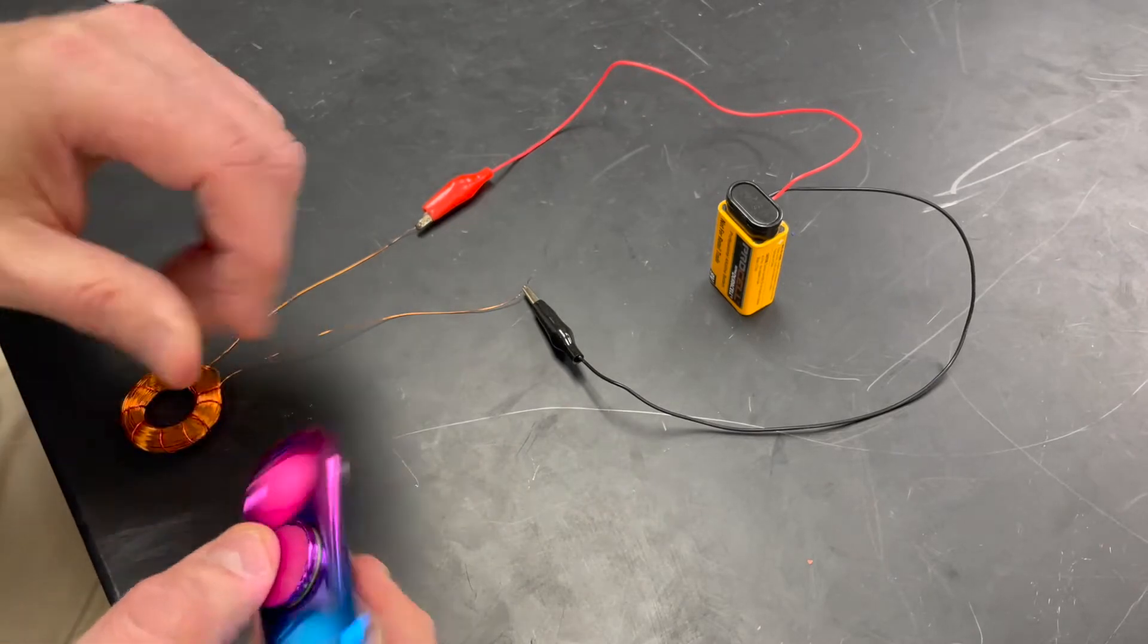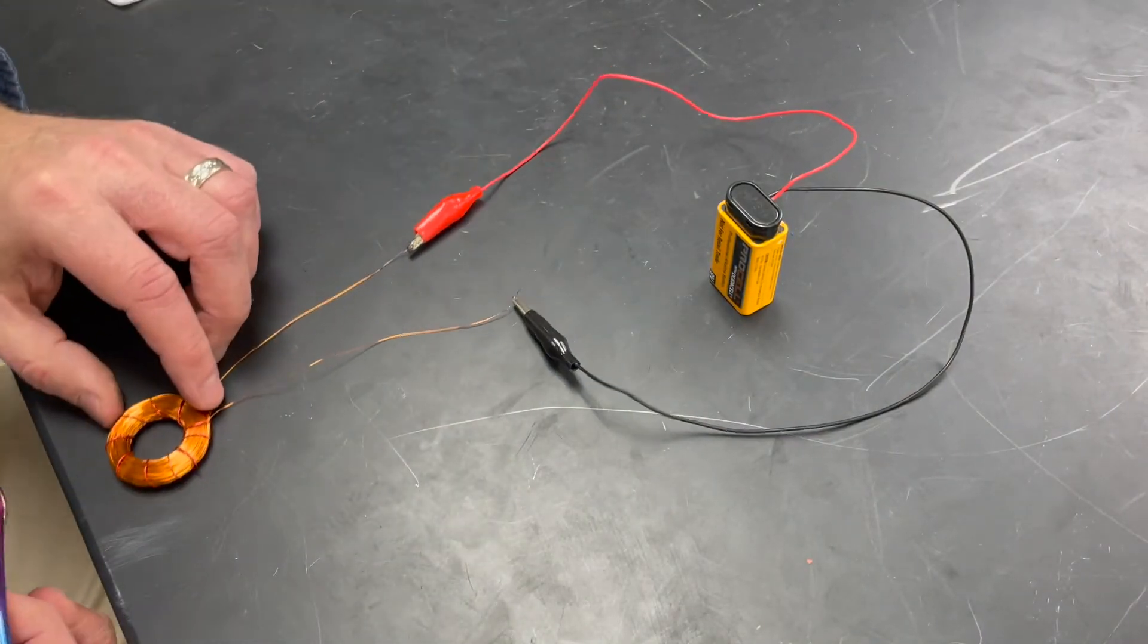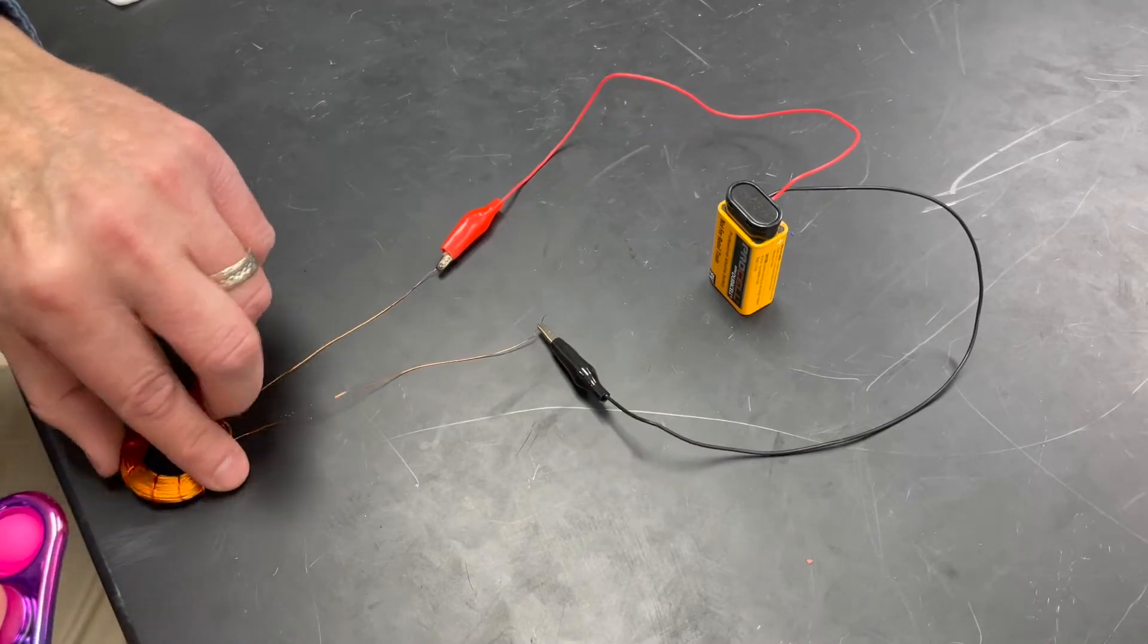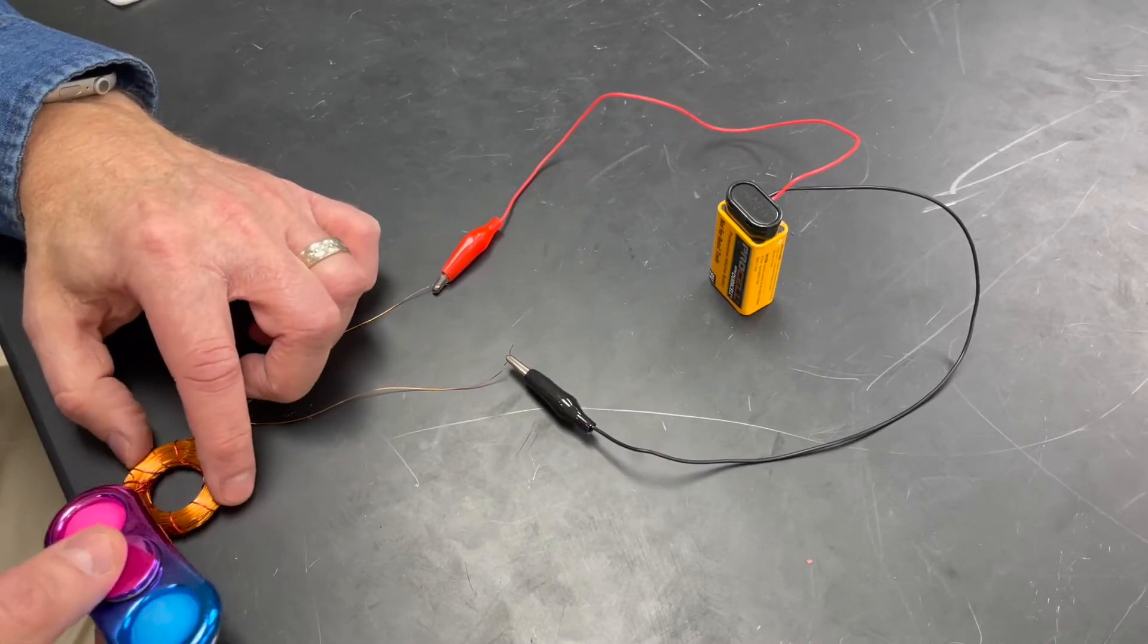Let's try that again with a fidget spinner that has two magnets. Can we use the electromagnet to make the spinner spin?